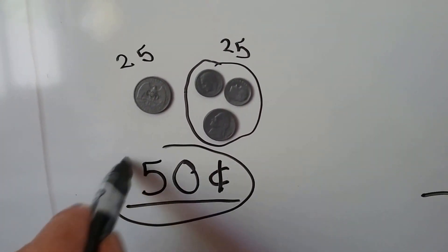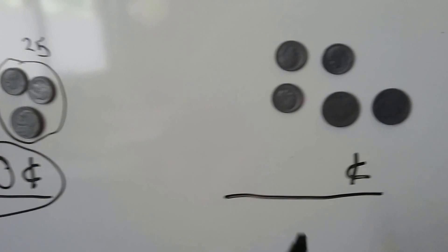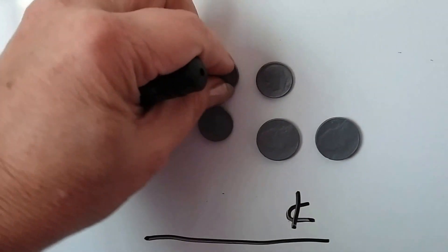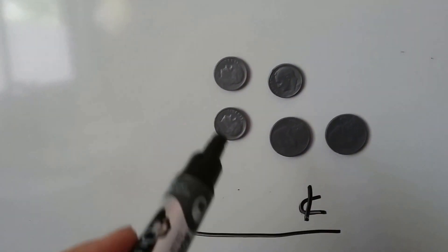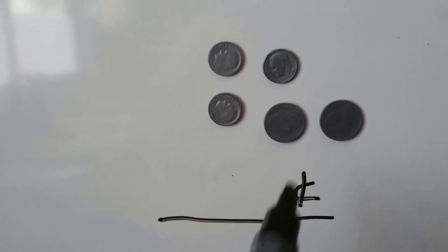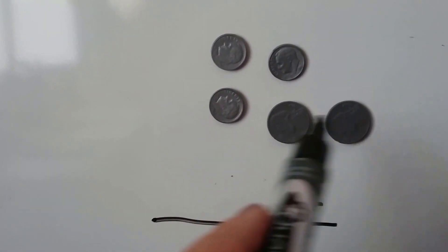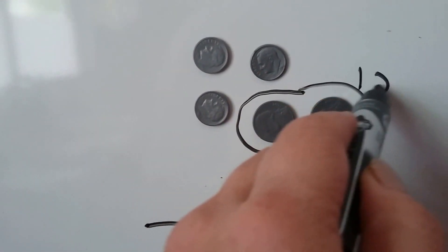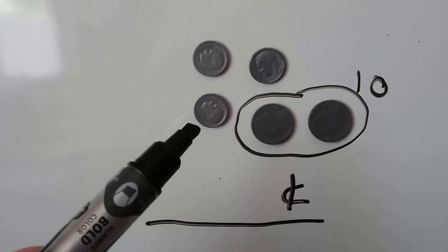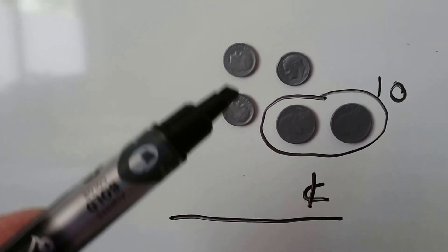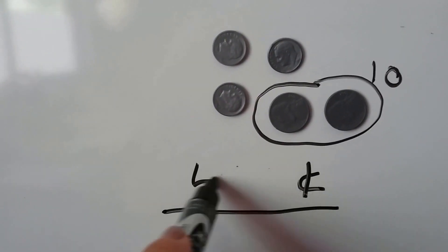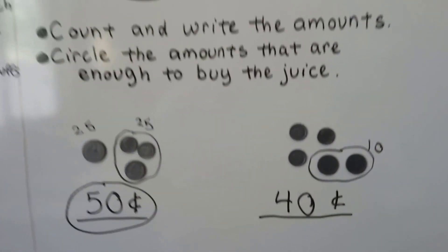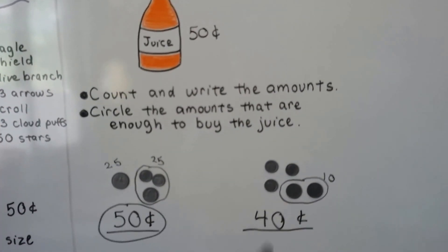Let's look at this one. We have a dime, a dime, and a dime — that's 10, 20, 30. And we have two nickels: five and five is ten. We can count all the coins as tens by skip counting by tens: 10, 20, 30, 40. Forty cents is not enough to buy the juice — the juice is 50 cents.